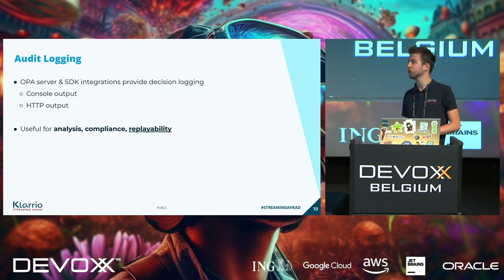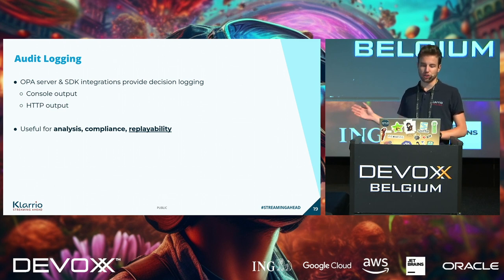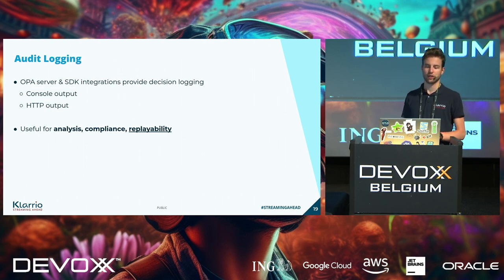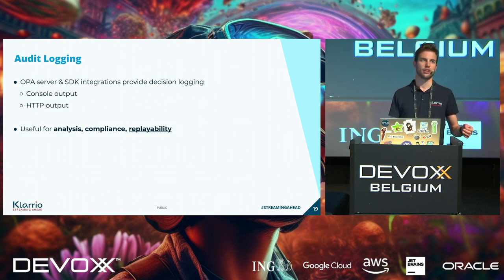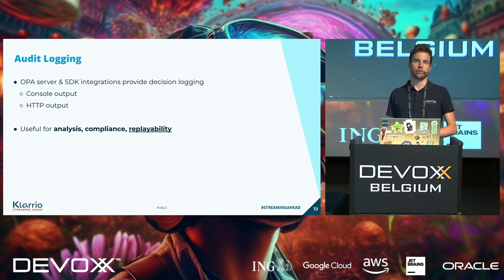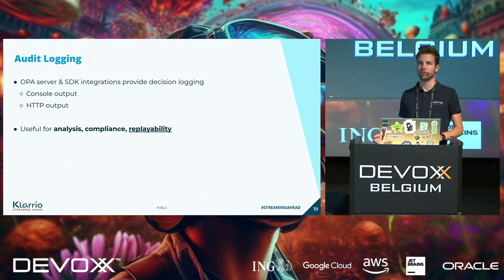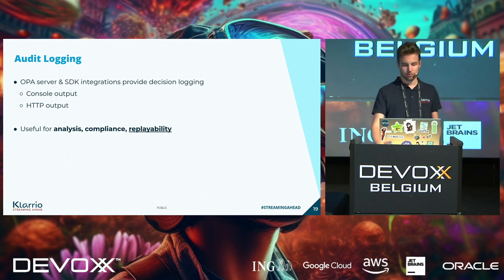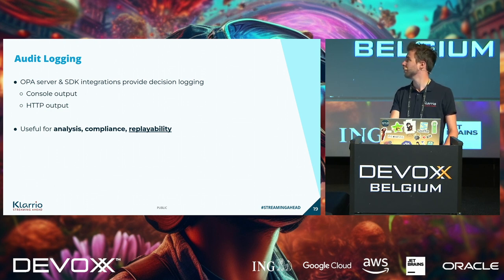The final aspect before the demo is audit logging. If you're using the OPA server or SDK, you can tell it to log its events to the console or a specific HTTP endpoint. This is useful not only for analysis and compliance, but also for replayability — your audit logs contain the full input being considered by your policy engine and the bundle revision used. You can take a certain event that happened, pull it locally, and rerun that event on your machine with the policy bundle, which is really valuable for debugging or validating policy changes. I really recommend doing this and building tools around it.